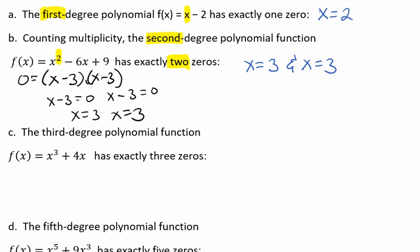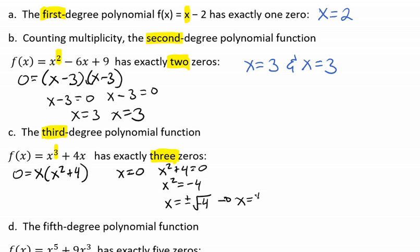The third degree polynomial f(x) = x³ + 4x has exactly three zeros. We can factor out an x, which gives us x(x² + 4) = 0. If we set this up, we get x = 0 using the zero product property. And then with x² + 4 = 0, we'll get a negative 4 there, and then x equals plus or minus the square root of negative 4.